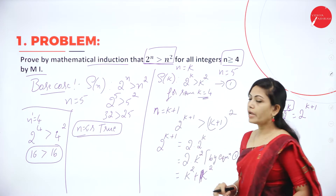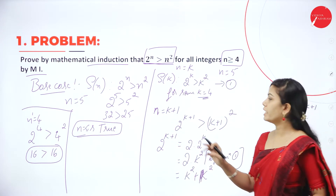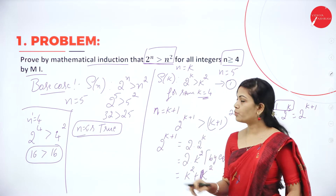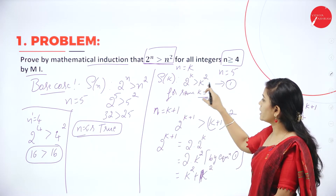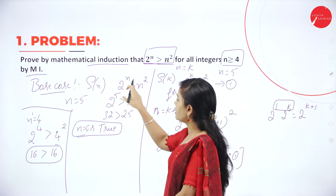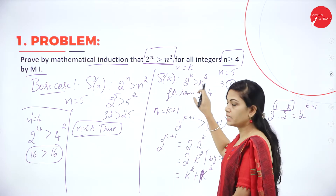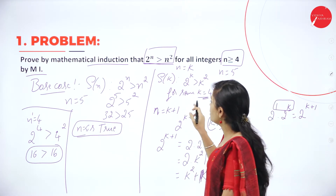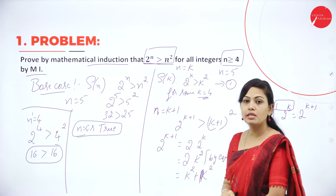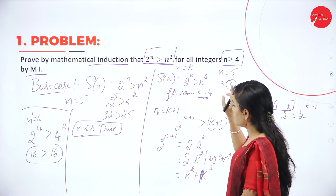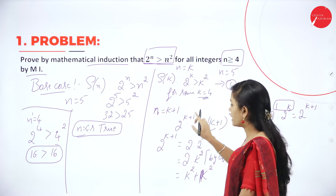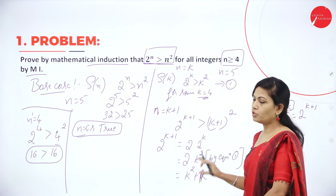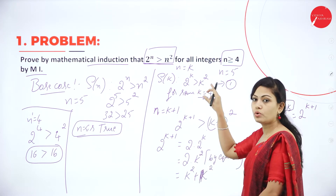In the inductive step we prove for n equal to k and n equal to k plus 1. For n equal to k, s of n gives 2 power k greater than k square, which is equation number 1. For n equal to k plus 1, replace k by k plus 1: you have to show 2 power k plus 1 greater than k plus 1 whole square.